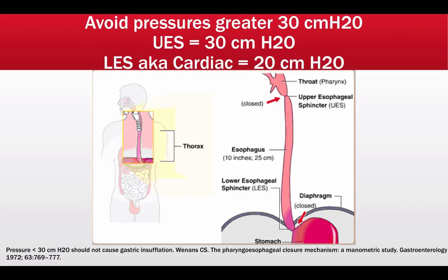Keeping pressures under 30 centimeters of water should not cause gastric insufflation. On the other hand, the lower esophageal sphincter — also known as the cardiac sphincter — requires only 20 centimeters of water pressure to overcome it. The lower you go, the less pressure is required to begin instilling air into the gastric tract. That study was conducted on healthy individuals with healthy sphincter tone; in sick patients, sphincter tone may not be as good, and medications may further loosen it. Pressures in excess of 20 centimeters of water may be sufficient to overcome the sphincters, causing the patient to vomit and aspirate.